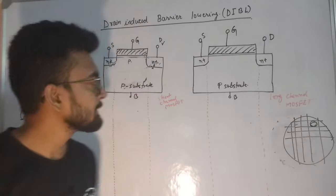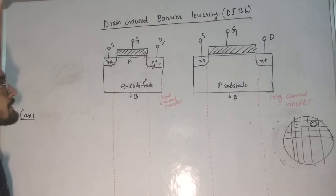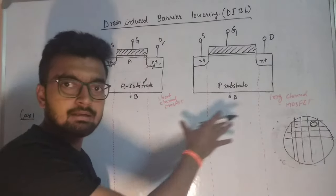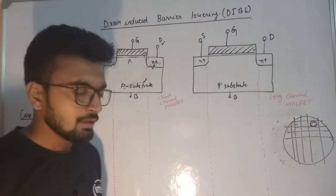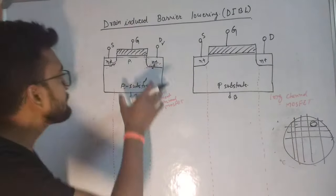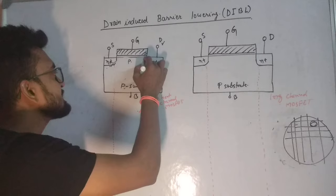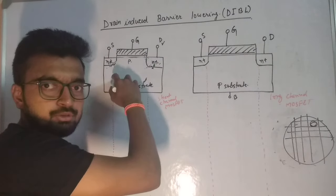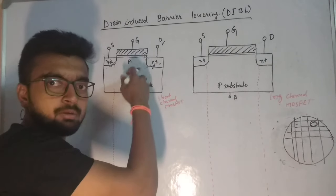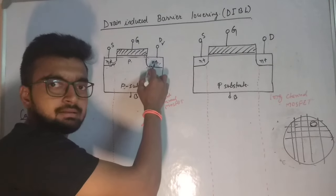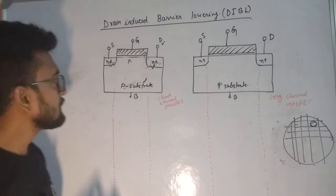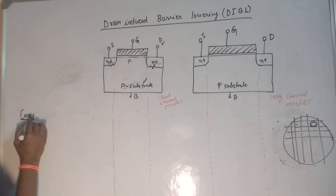Let us consider two MOSFETs - one short channel and another long channel. When I say short channel, I mean the channel length is comparable with the depletion region width at the drain and the source. The channel length should be comparable with the sum of the widths of the depletion regions at the source and the drain.